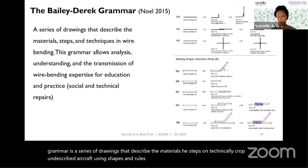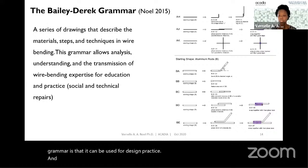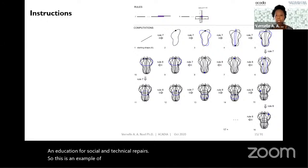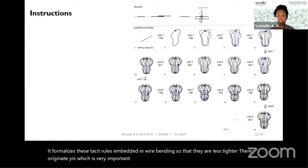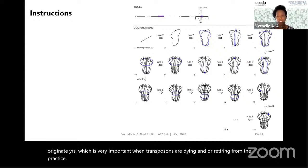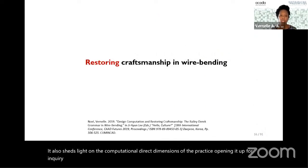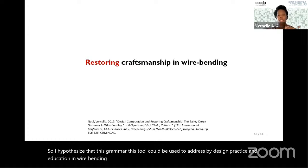The hypothesis behind this grammar is that it can be used for design practice and education for social and technical ideas. It formalizes tacit rules embedded in wire bending so that they are less tied to their originators — which is very important when craftspersons are dying or retiring. It also sheds light on the computational dimensions of the practice, opening it up for inquiry by others. I hypothesized this grammar could be used to address design practice and education in wire bending, so I went to Trinidad and conducted a series of workshops to test and evaluate this hypothesis.